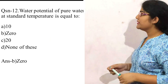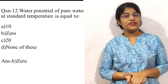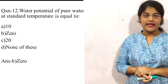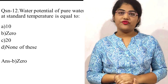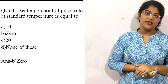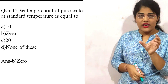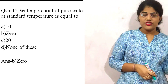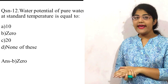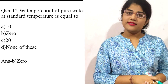Question number twelve: water potential of pure water at standard temperature is equal to what? The key word here is 'pure water'. Options are option A is 10, option B is 0, option C is 20, and option D is none of these. The correct option is B, which is 0. Pure water has maximum or zero water potential — this is a formula-based straightforward question.